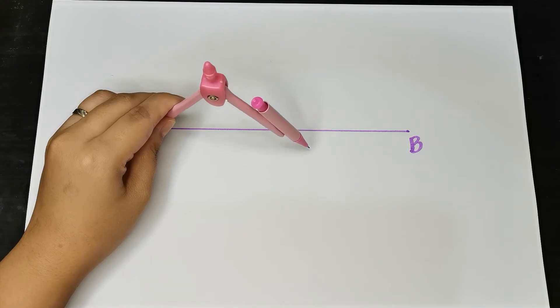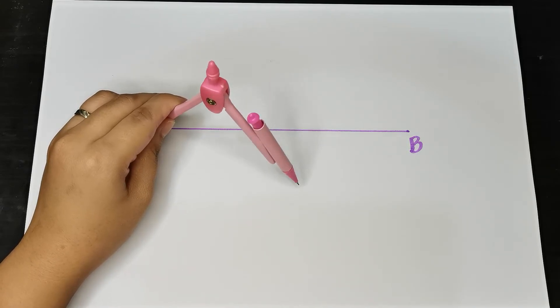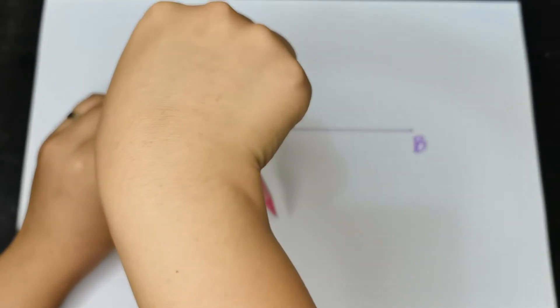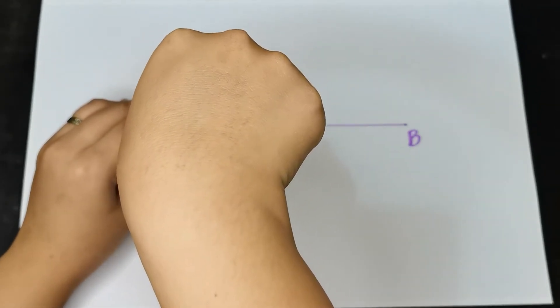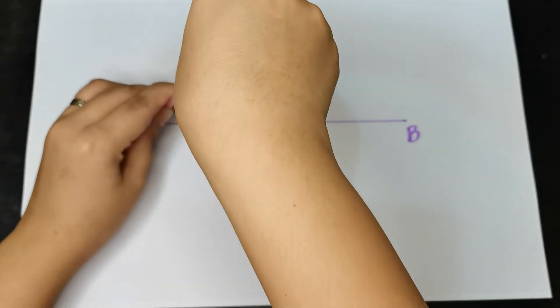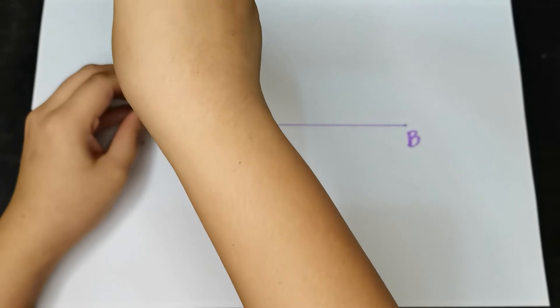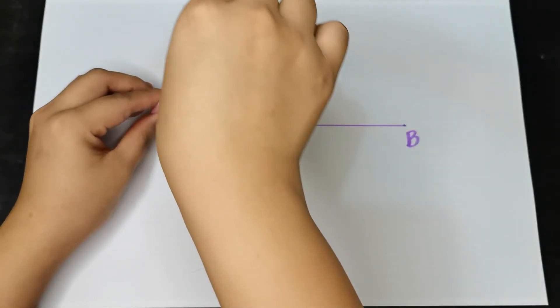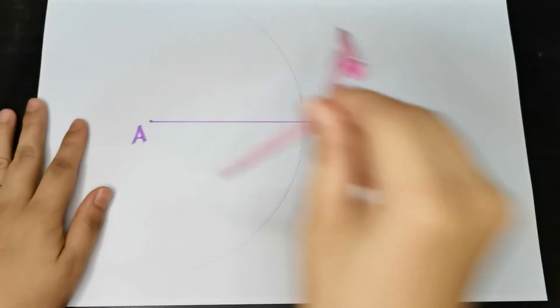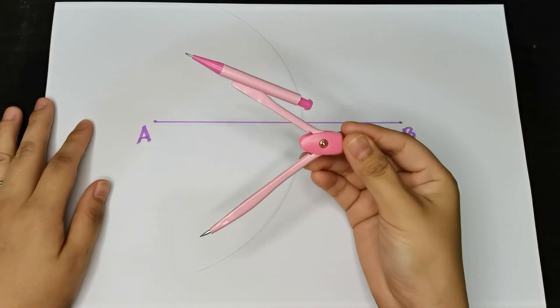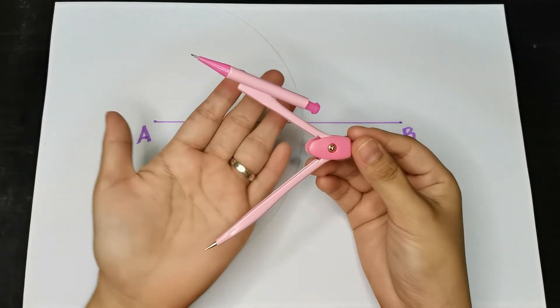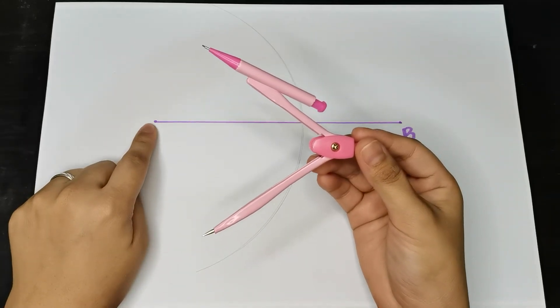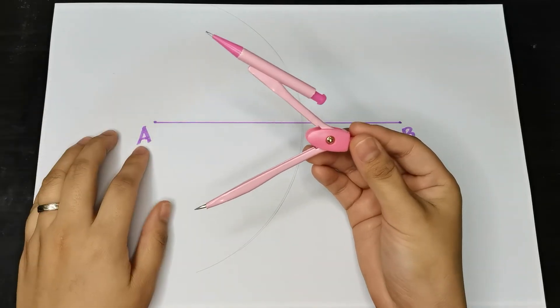Step two: with this length, swing a large arc that will go above and below line segment AB. Swing it—just swing it like that. Do not move the compass opening.